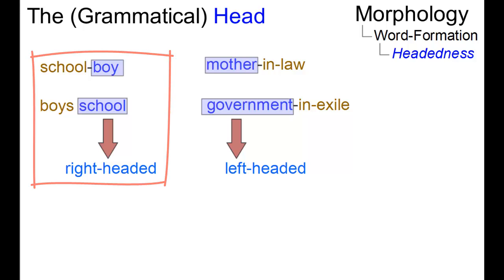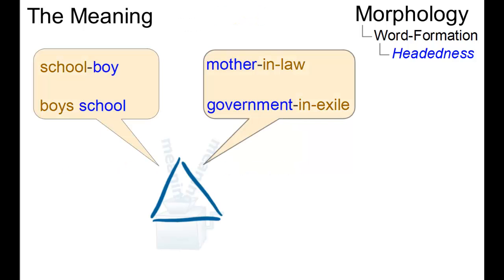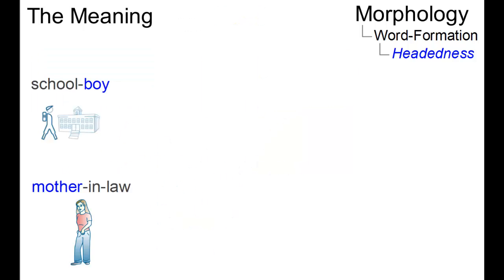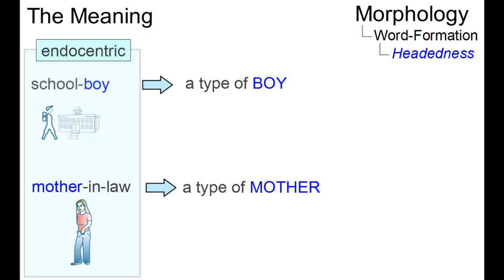Let us now see in what way the head influences the meaning of a compound. In schoolboy and mother-in-law, the grammatical head also defines the meaning and establishes a hyponymy relationship with the compound. A schoolboy is a type of boy, and a mother-in-law a type of mother. If such a relationship can be established, the compound is referred to as endocentric.